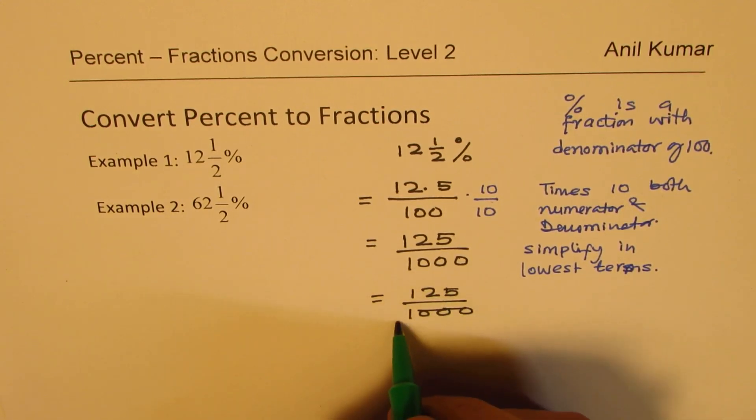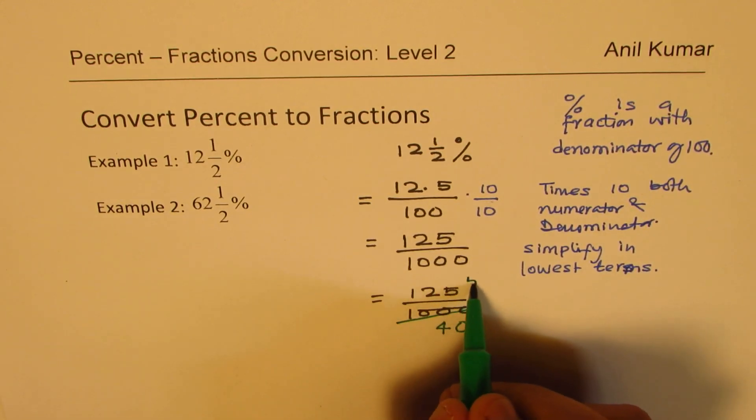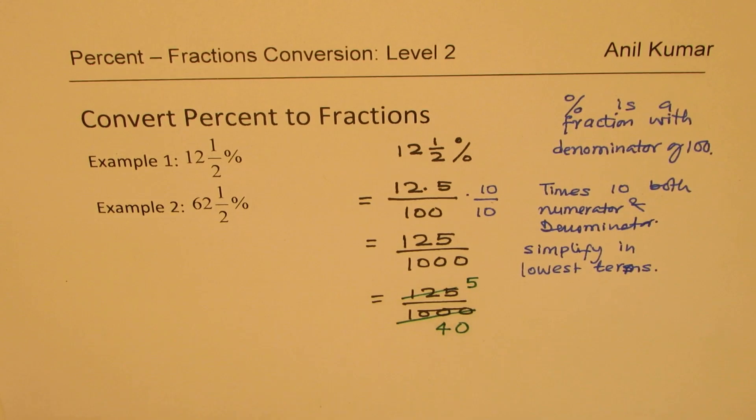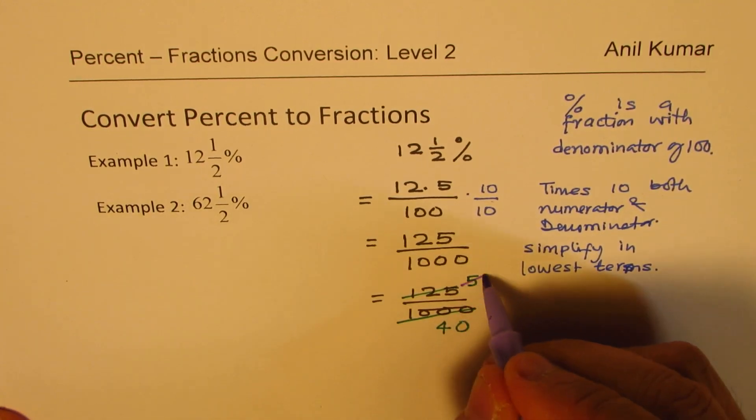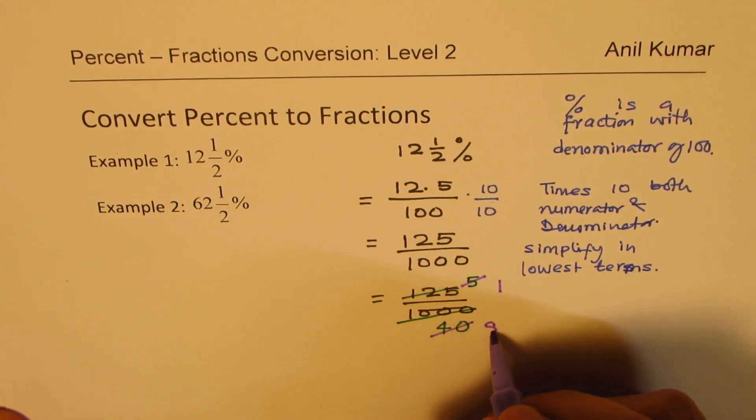So 25 times 4 is 100 and then a 0. And here 25, 4 is 100 and 125 is 5 times. So we get 5 over 40. Now this could be further simplified. I could actually now divide both by 5. So if I divide both by 5, I get 1 over 8.